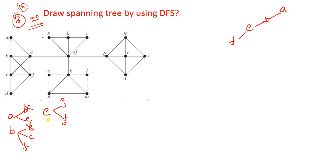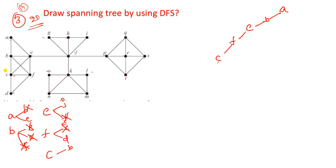The new vertex is F. F has B - already visited, E - already visited, C not visited, and D. Among C and D we take C. Explore C - C has B, E, F, and D. B, E, F are already visited. The only remaining element is D. Insert D. Explore D - D has C and F, both already visited. Stop and backtrack to C.